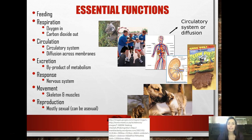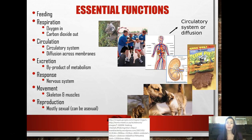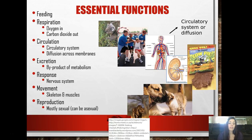There are some essential functions that animals can do. They can feed, since they're heterotrophs. Respiration - they take oxygen in and breathe carbon dioxide out. They have a circulatory system and diffusion across their membranes. They also do excretion, which is just a byproduct of their metabolism. They have a nervous system, they're able to move through skeletons and muscles, and their reproduction is mostly sexual, although some can reproduce asexually.